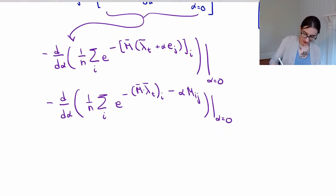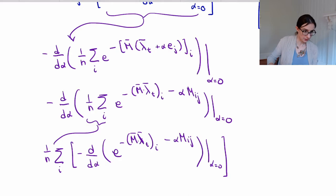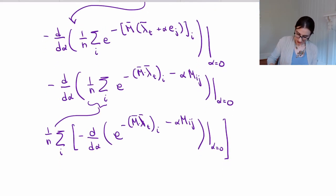Now pull this thing out. I'm just going to pull out the 1 over n and the sum over i, and then this derivative now is on the inside. d/d alpha, e to the negative. And now I'm going to actually go and take that derivative.